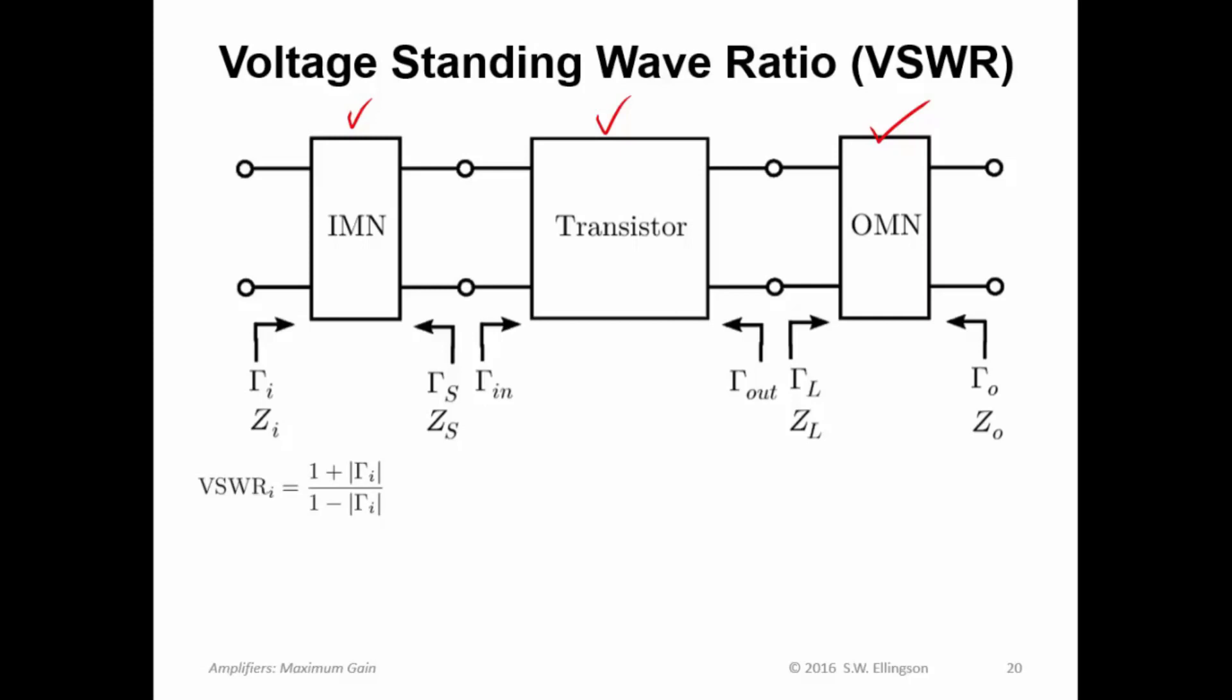The VSWR at the input is given by this expression, which depends on gamma sub i. Remember, gamma sub i is the reflection coefficient looking in this way. It's what the user of this device sees looking into the input of the amplifier, and I'm just reminding you here that also corresponds to an input impedance, z sub i, in the usual way.